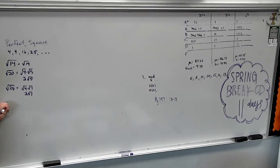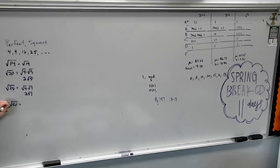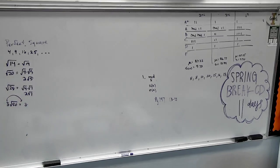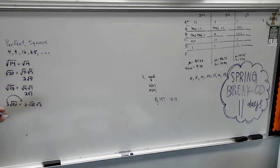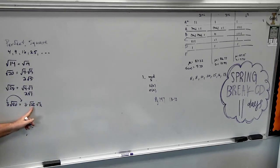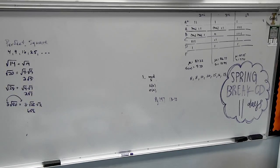If I throw a number in front, it's not a big deal at all. If I have 3 times root 50, all I do is rewrite the 3 and carry it over. What perfect square goes into 50? 25 times 2. Maybe write that step down, then do the rest in your head. The square root of 25 is 5. 5 times 3 is 15. So the answer is 15 root 2.